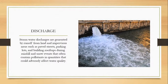Discharge: Stormwater discharges are generated by runoff from land and impervious areas such as paved streets, parking lots, and building rooftops during rainfall and snow events, and often contain pollutants in quantities that could adversely affect water quality.